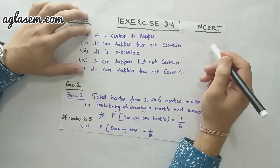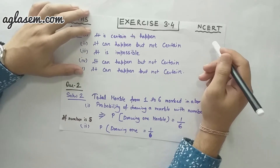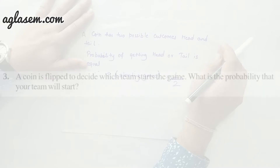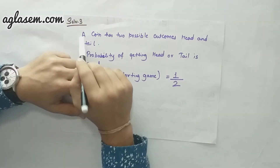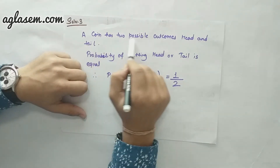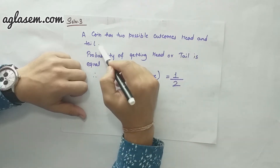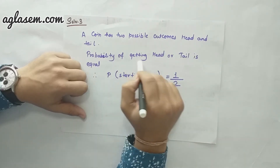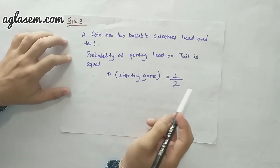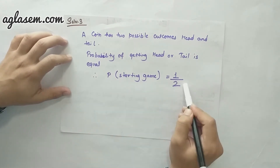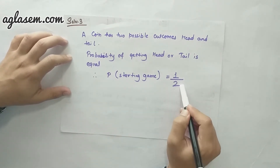Now let's move to question number three: a coin is flipped to decide which team starts the game. What is the probability that your team will start the game? A coin has two possible outcomes — head or tails. The probability of getting head or tail is equal. Therefore, our probability is half, one by two.